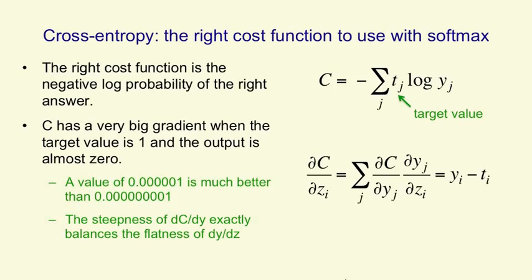So that derivative is how fast the cost function changes as you change the output of a unit times how fast the output of the unit changes as you change zi.